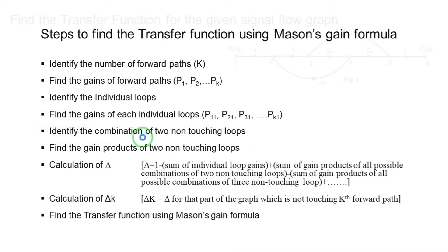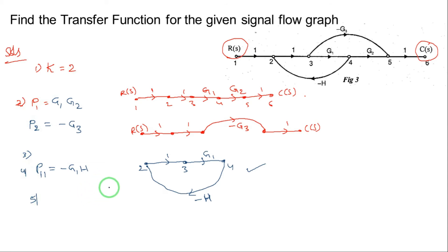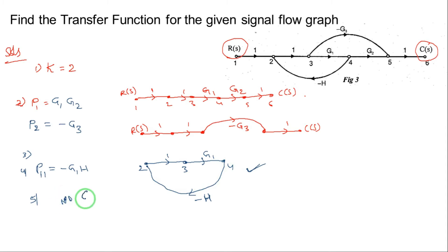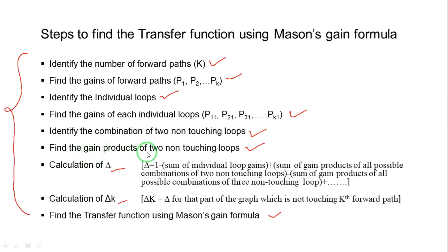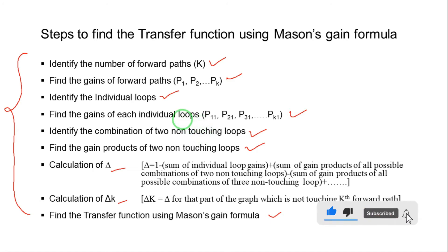Step five: identify the combinations of two non-touching loops. If there are two or more loops, we need to identify any two loops that do not touch each other and find their combinations. In this example, since there is only one individual loop, there are no combinations of two non-touching loops. Therefore, the gain products of two non-touching loops is zero.